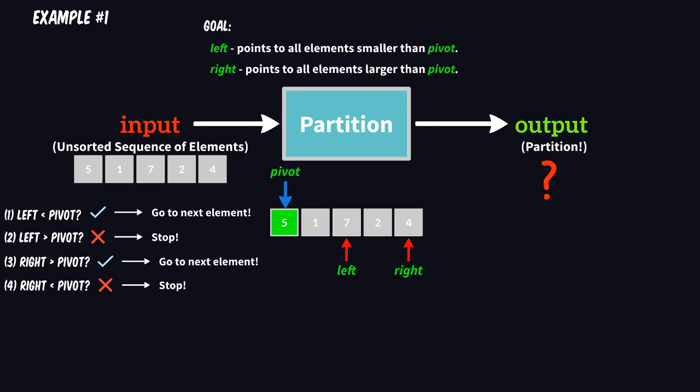Because you remember that we want to keep the right cursor pointing only to elements greater than the pivot, and the left cursor pointing only to the elements smaller than the pivot. Once you've stopped, you will point with the left cursor to the element greater than the pivot, and with the right cursor to an element smaller than the pivot. That's the stopping condition. And if that's the case, we should swap.